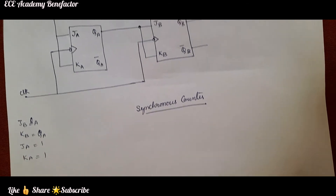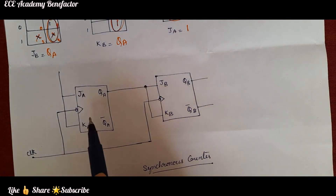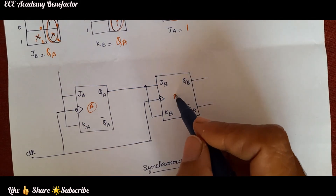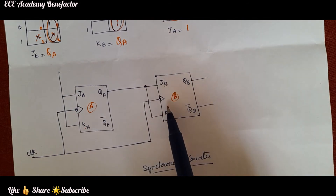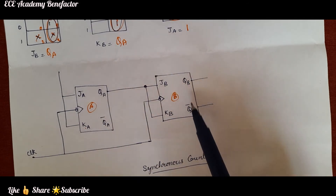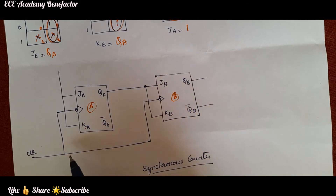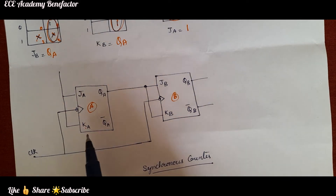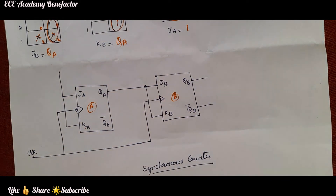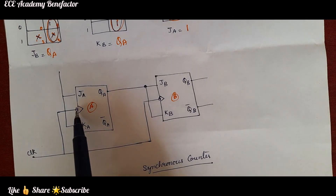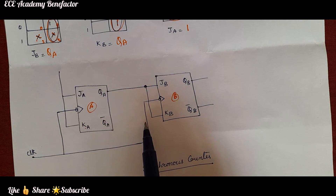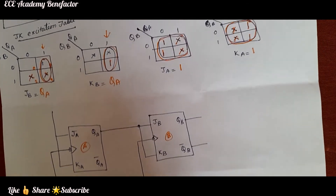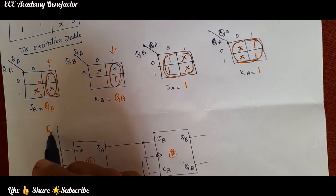So now we can easily write the equations: JB equals QA, KB equals QA, JA equals 1, and KA equals 1. Now we need to draw the logic diagram. We require two flip-flops. One is flip-flop A having inputs JA and KA. Another is flip-flop B having inputs JB and KB. The outputs are QA, QA-bar, QB, QB-bar.